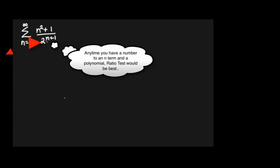Anytime you've got a number to the n, like you do right here, and it's got a polynomial present as well, that should tell you ratio test. There's also another thing that should tell you ratio testing.